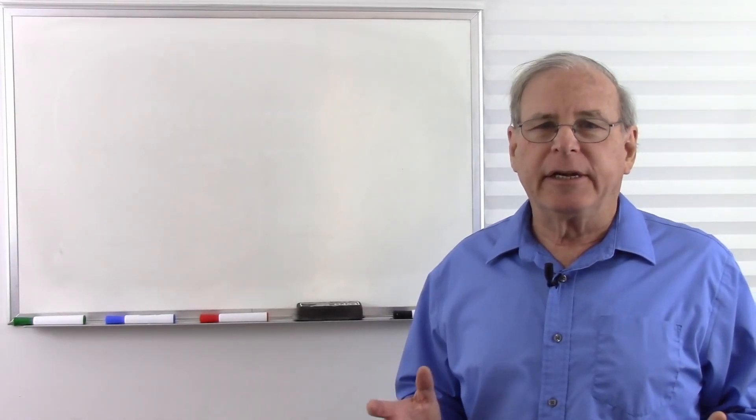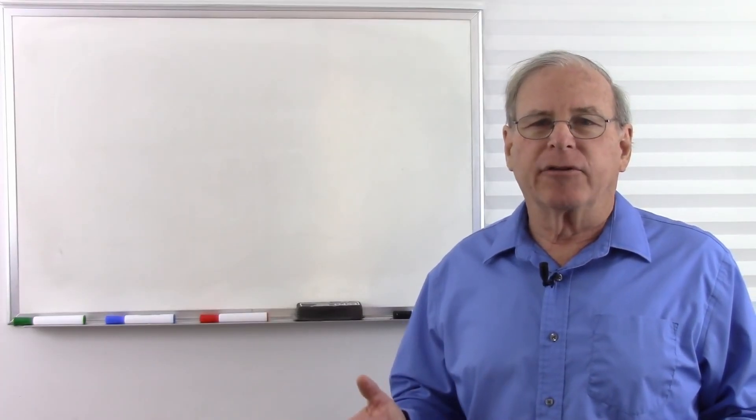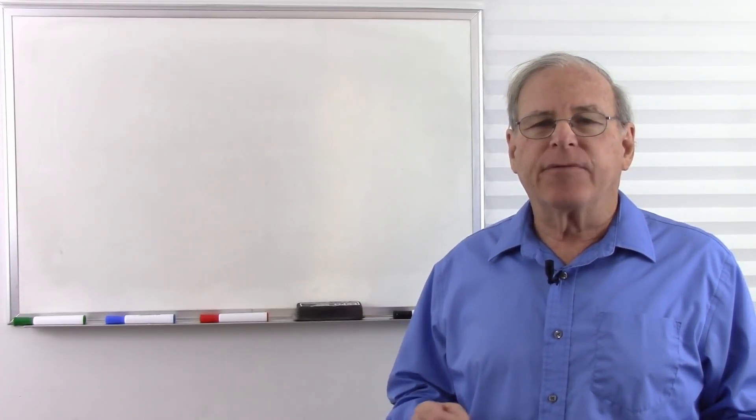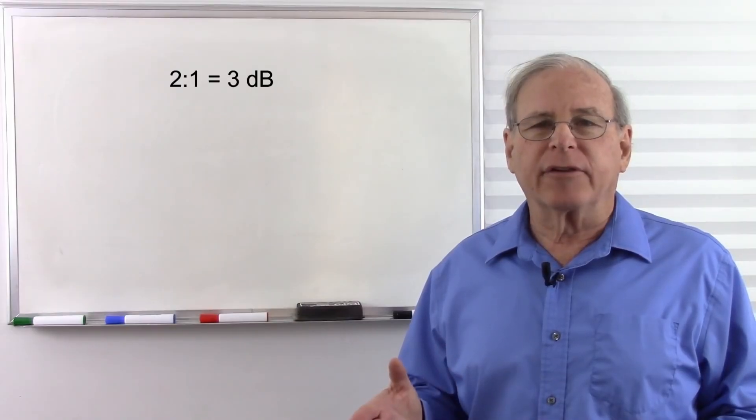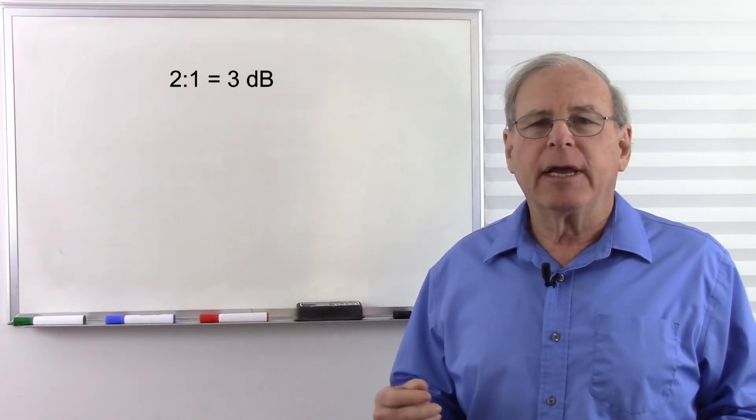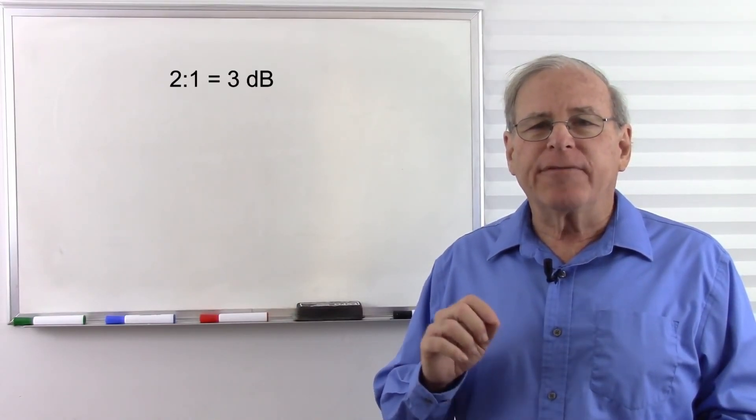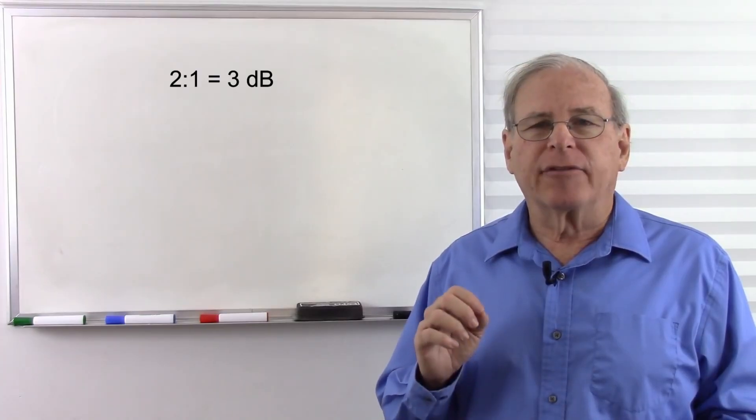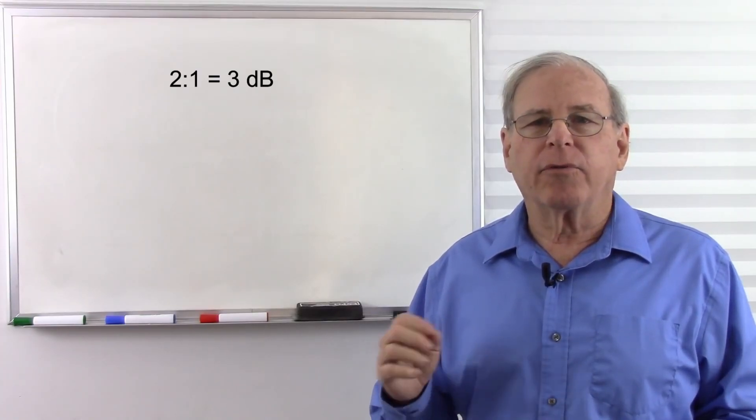So far we've talked about 10 decibels, which means multiplying our sound pressure by 10. If we multiply our sound pressure by 2, we get 3 decibels. And this is pretty important, because for us to hear the difference between two sound levels, there has to be a doubling in power, or 3 decibels change.